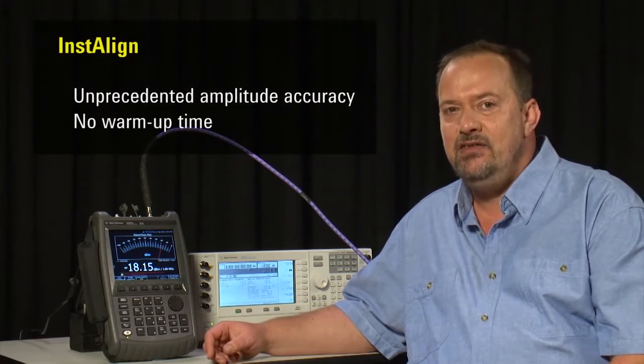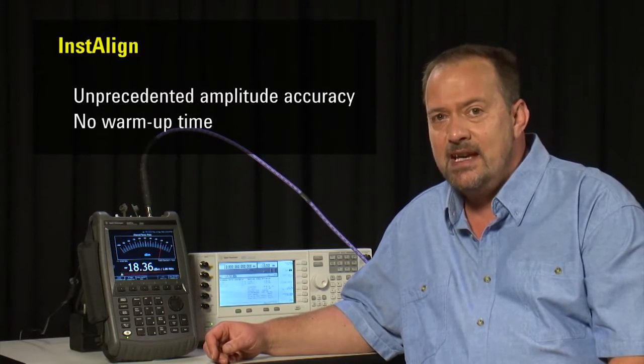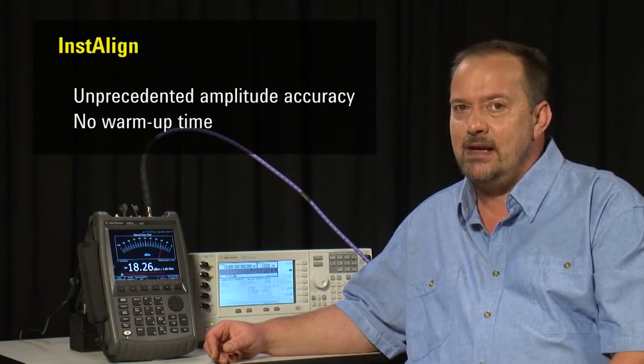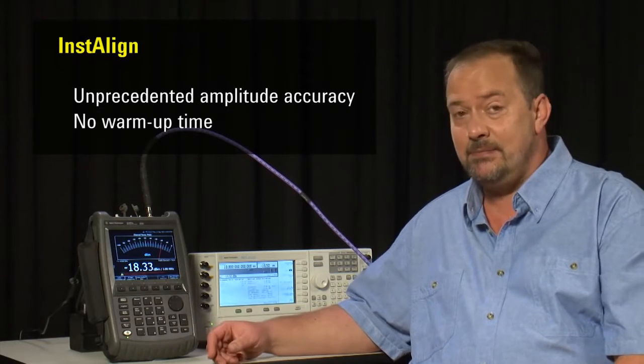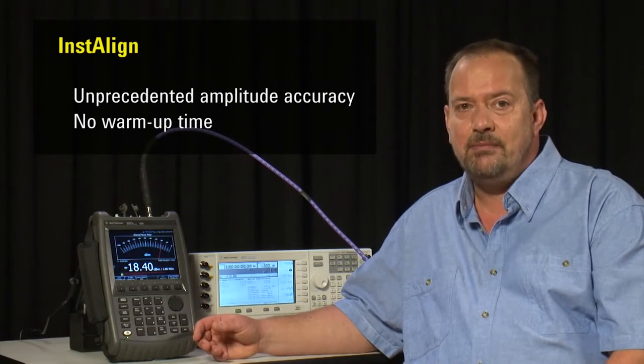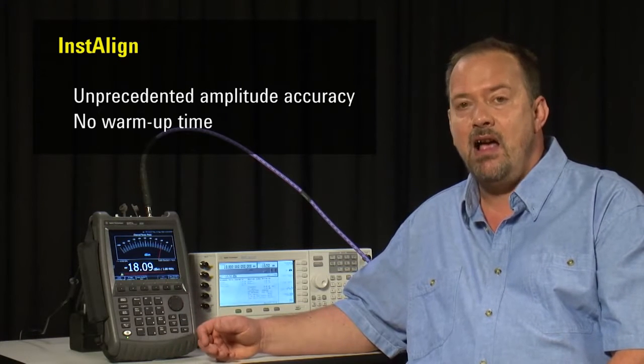This is made possible by Agilent's unique InstaLine technology, so that across the entire operating temperature range of the FieldFox, from minus 10 to plus 55 degrees centigrade, we can measure RF amplitude with a typical accuracy of about half a dB.